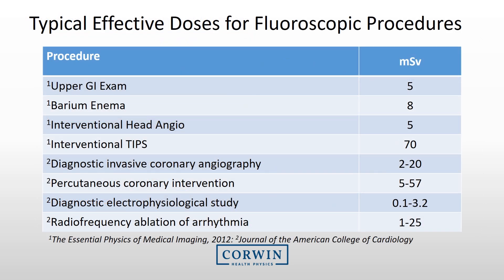A unique difference between CT and fluoroscopic procedures is the range of doses. This table shows some typical effective doses from fluoroscopic procedures, and you will see that even for the same type of procedure, there is a broad range of doses. Because of this variance, even small modifications to optimized techniques can dramatically decrease patient dose.